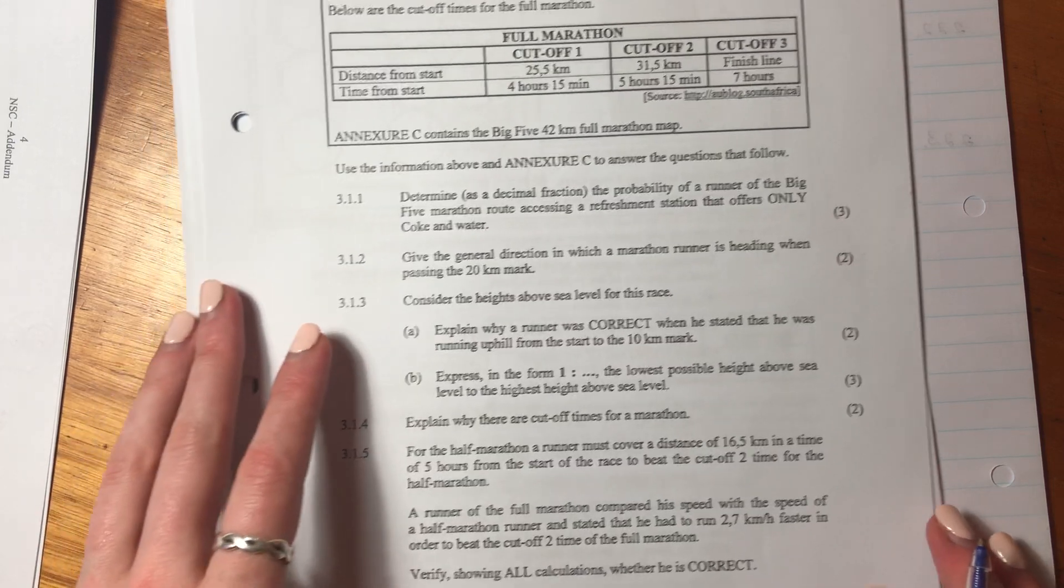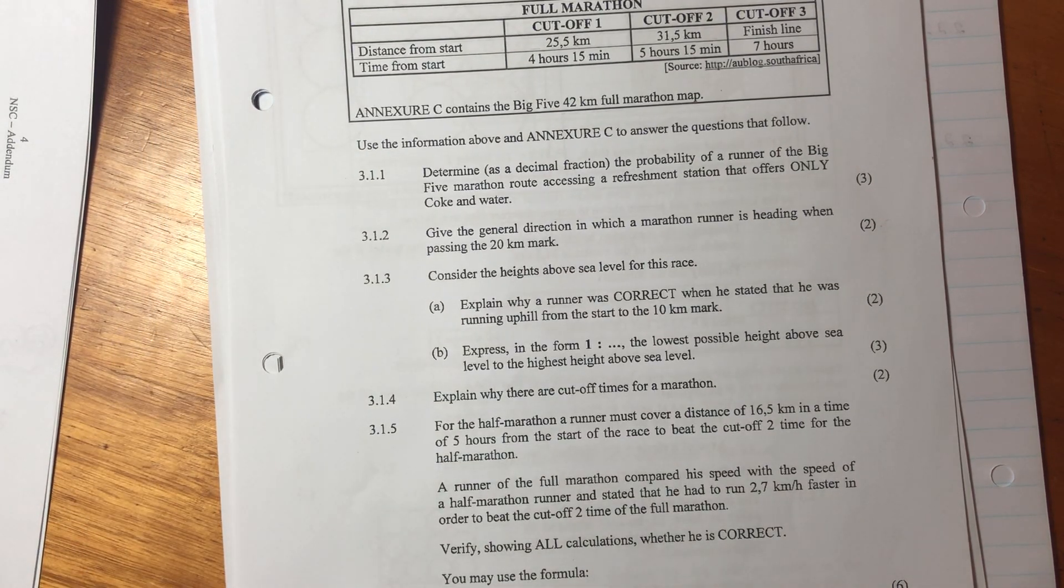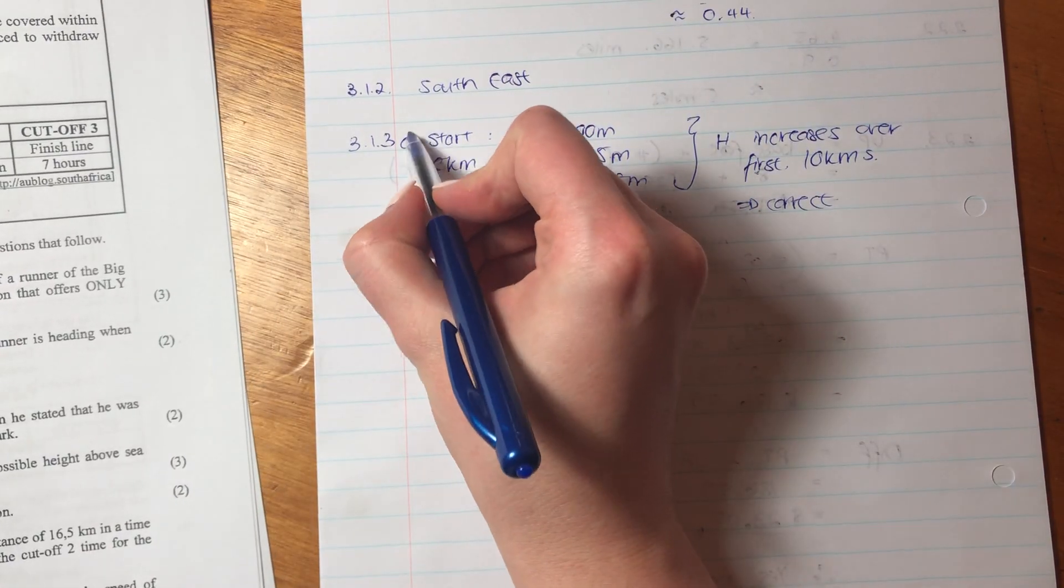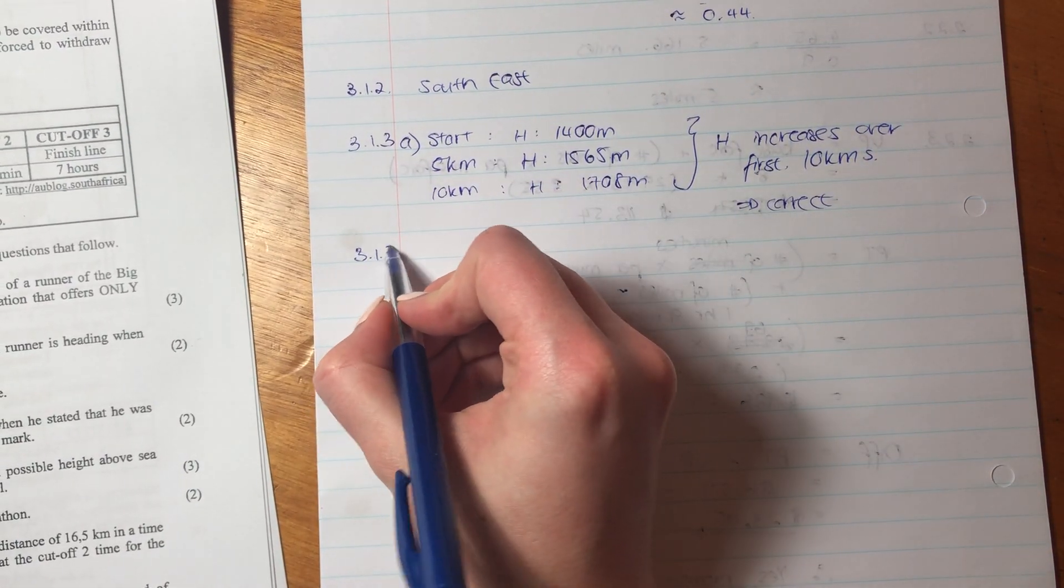Remember with these questions, and this is something students often forget, when they're asking you to explain whether he's correct or not, always state whether he is. Don't just give an explanation and leave it at that and assume that the marker just knows what you mean. Always give, always say, is he correct or is he not correct? So that was A. Let's now move on to 3.1.3 B.